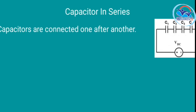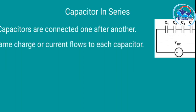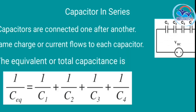In a series connection, the capacitors are connected one after another. The total equivalent capacitance is equal to: 1/C = 1/C1 + 1/C2 + 1/C3 + 1/C4 for four capacitors connected in series.